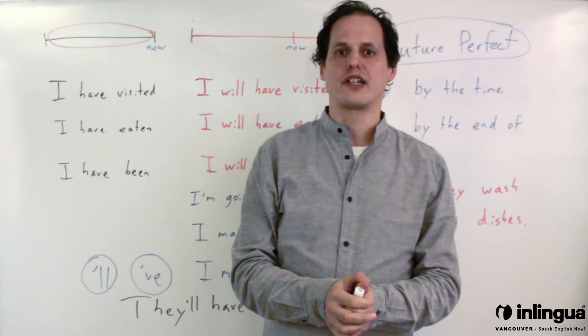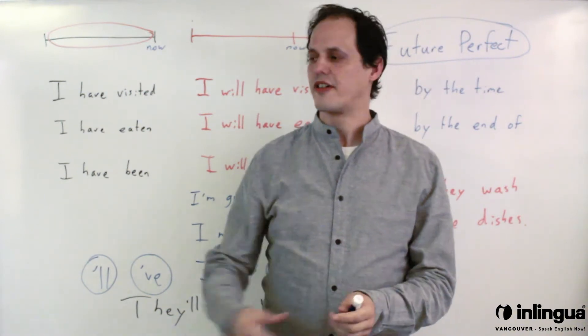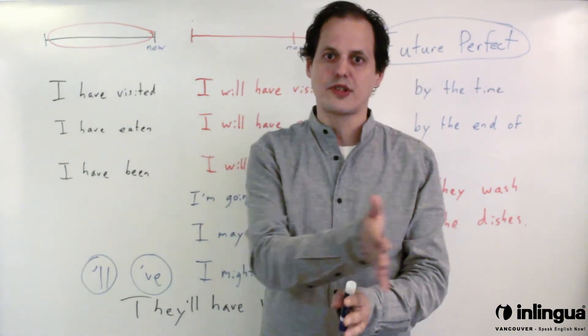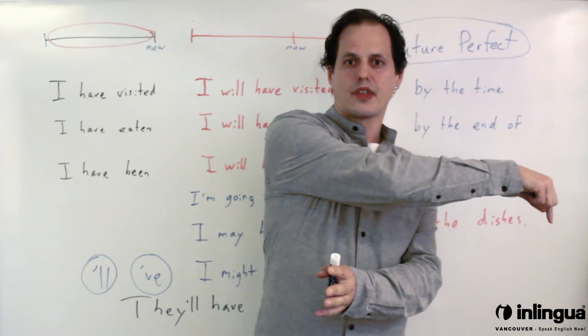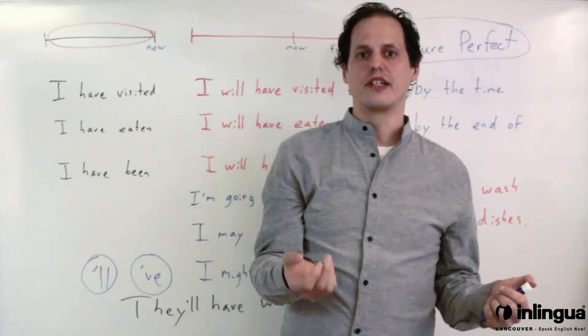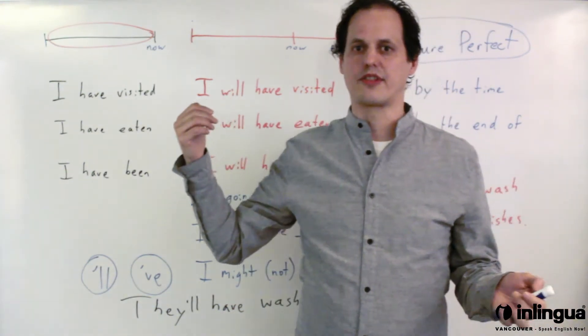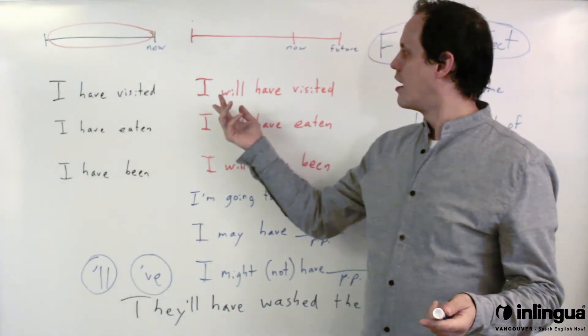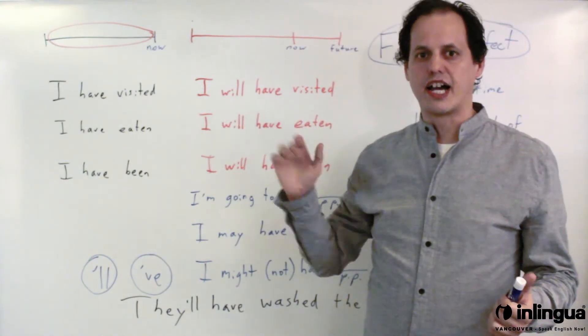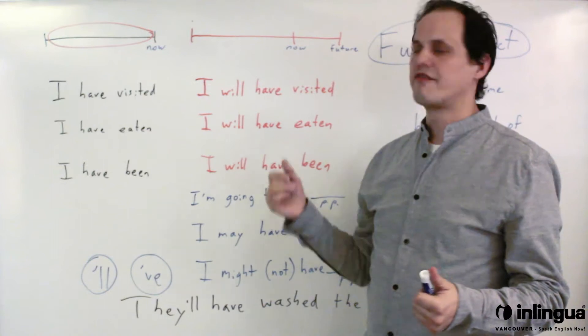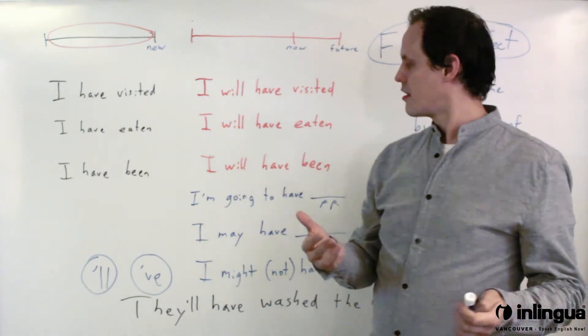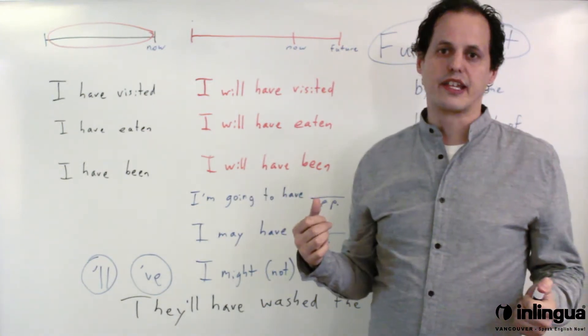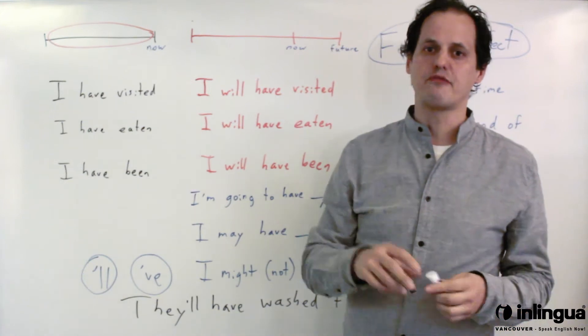Well just the same way we can use future perfect to talk about our experience from the past up to a moment in the future. So all we do is put in will and it's almost the same form. So I will have visited five countries, I will have eaten raw horse, I will have been a student at this school for five months.